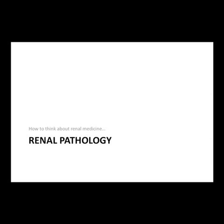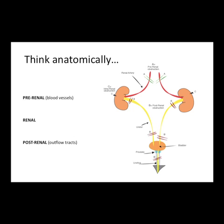How do you think about renal medicine if you take a global view? The key thing is pathology, and the way to really understand renal medicine is to think anatomically. At the basic level, you've got blood vessels coming into the kidney, the kidney performs excretion of waste, fluid balance regulation, hormones, and produces urine going into the ureters and bladder. You can think about problems in three sections: pre-renal, renal, and post-renal.